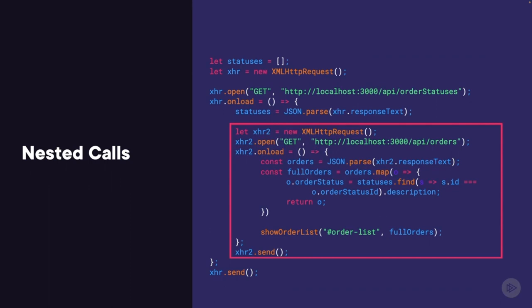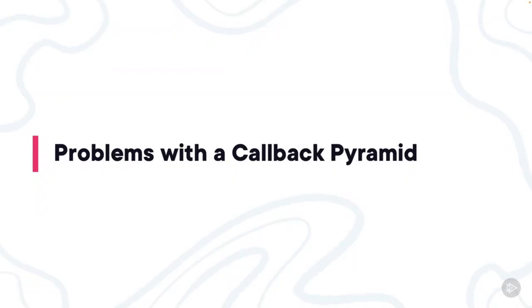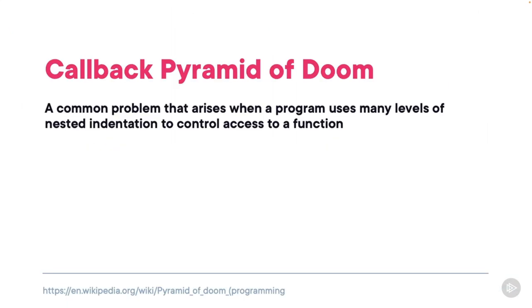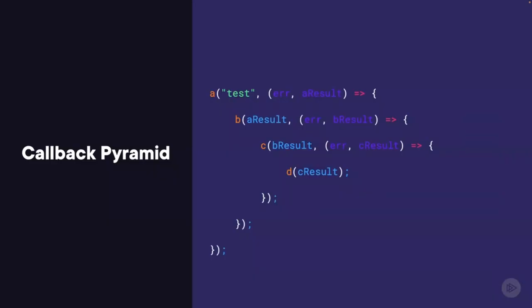What problems could be caused by nesting functions in this manner? One way to solve the race condition problem is to use callbacks — functions inside of functions. While solving one problem, we've introduced another: the callback pyramid of doom. According to Wikipedia, a callback pyramid of doom is a common problem that arises when a program uses many levels of nested indentation to control access to a function. It gets its name from the indentation on the left, which forms a pyramid shape.